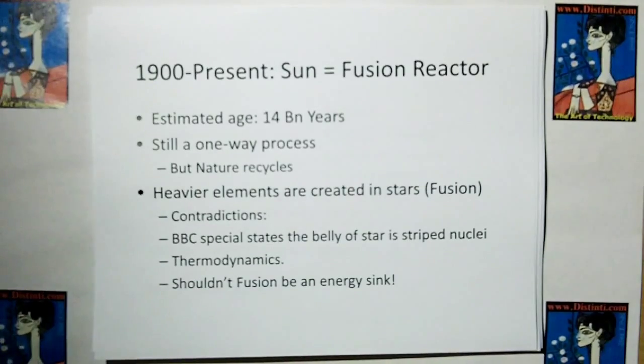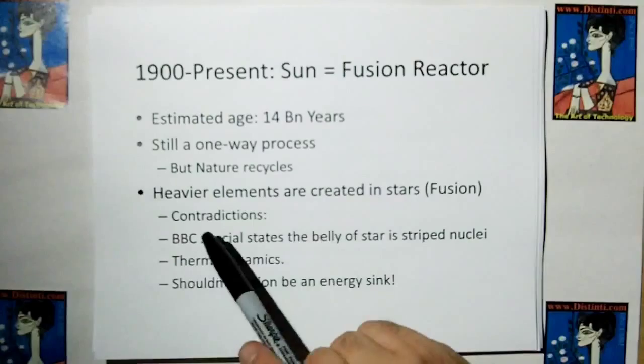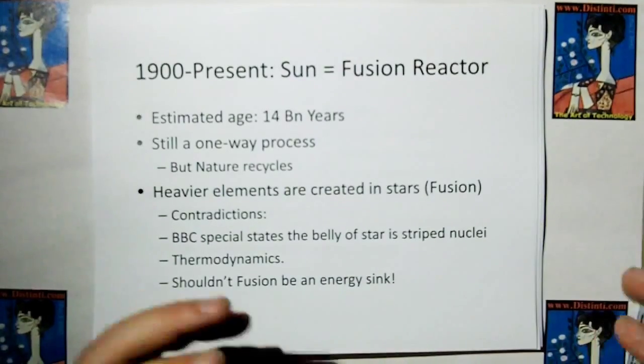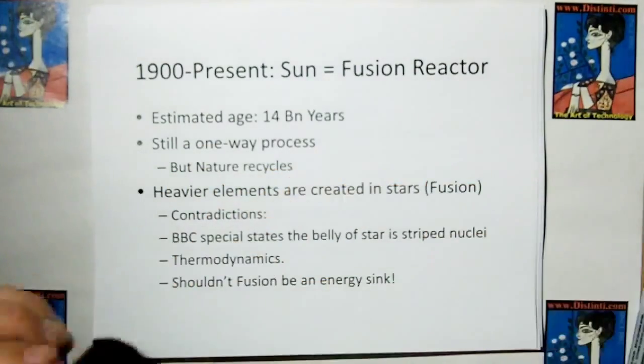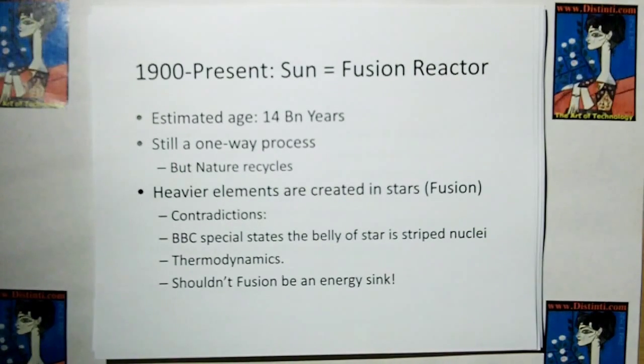It's still only a one-way process, but the problem I have is that nature recycles. I'm going to show you the sun is actually a two-way process. But with the present theory, they say that the heavier elements are created in stars. So heavier hydrogen fuses into heavier and heavier elements, and therefore the mass of the sun must be getting larger and larger.